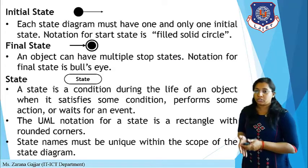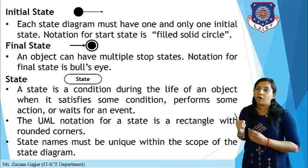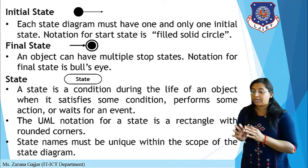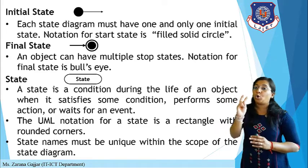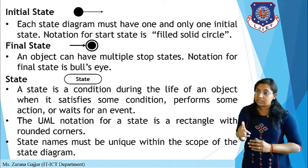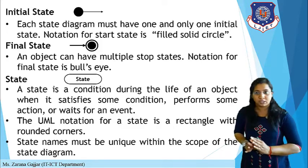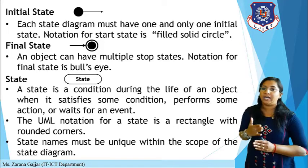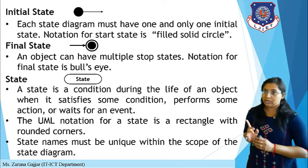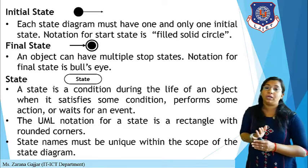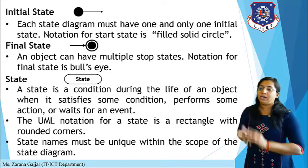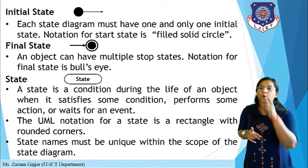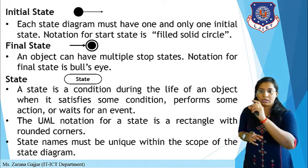Each state diagram must have one and only one initial state — unlike the activity diagram where an activity can have one or more than one initial activity. In the state diagram, there is a single initial state. The notation for the start state is a filled solid circle. An object can have multiple stop states — initial activity will be one, but you can have multiple final states. The notation for the final state is a bull's-eye, similar to the activity diagram: a solid circle inside with a simple circle outside.